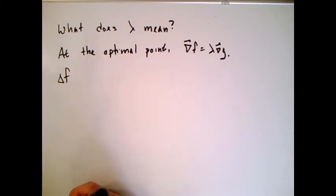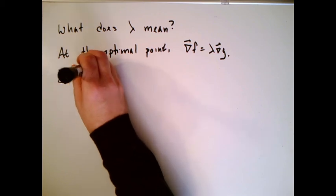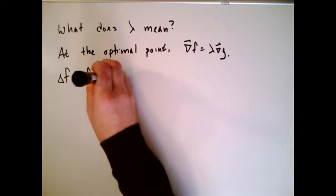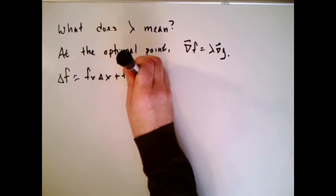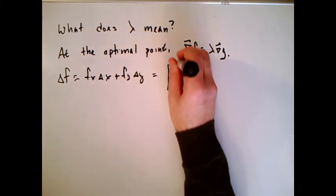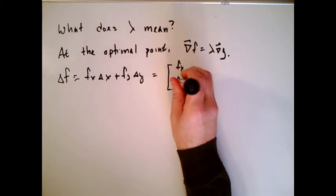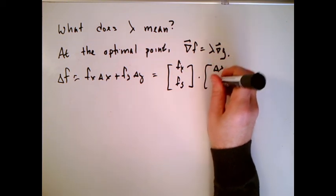What we're going to do is start where we did in chapter 14 over and over. This is equal to fx delta x plus fy delta y. I'm just going to write that as a dot product of two vectors. This is fx, fy dot delta x, delta y.